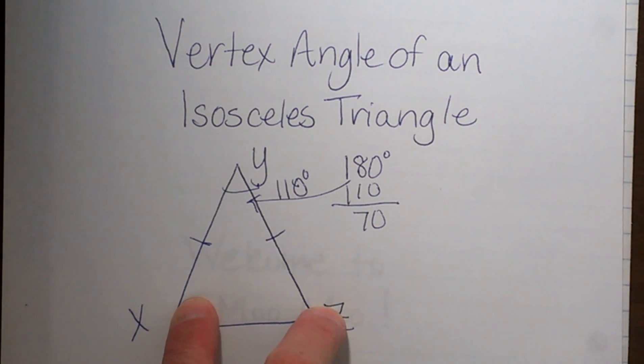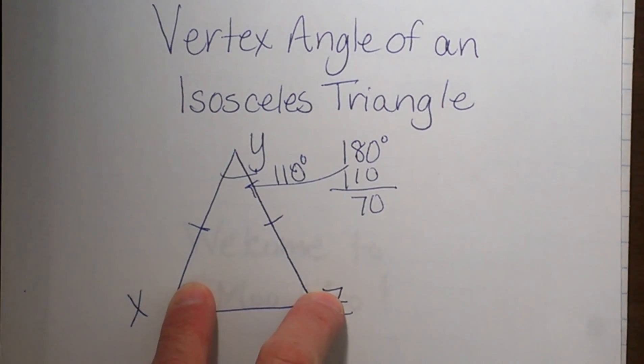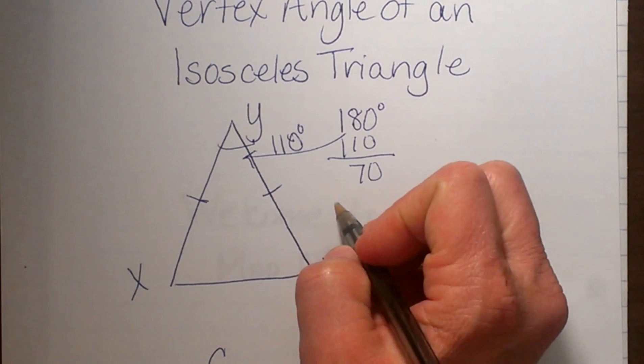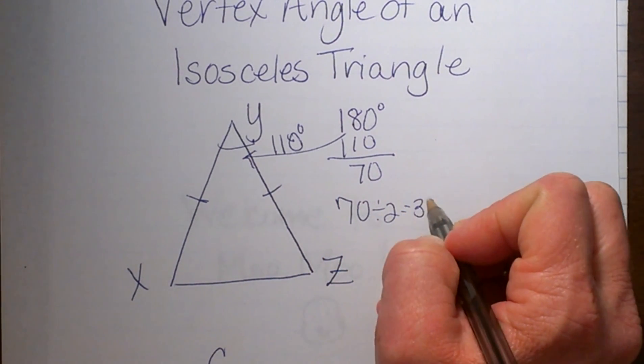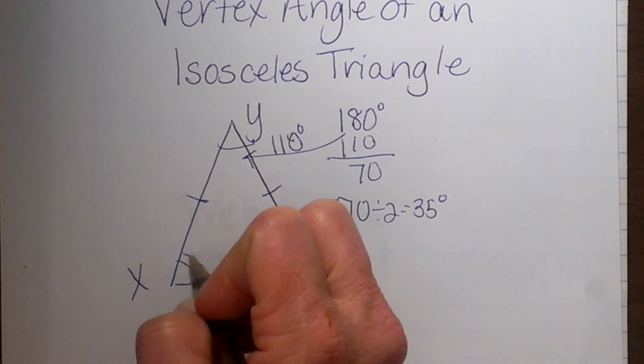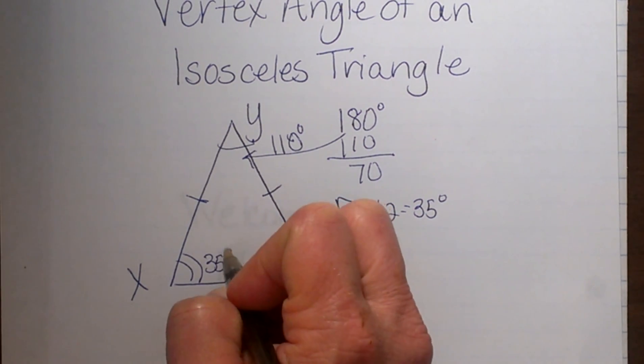But I am going to split them equally between these two base angles because they are congruent. So 70 divided equally gives me 35 degrees. That means each one of these two angles would measure 35 degrees.